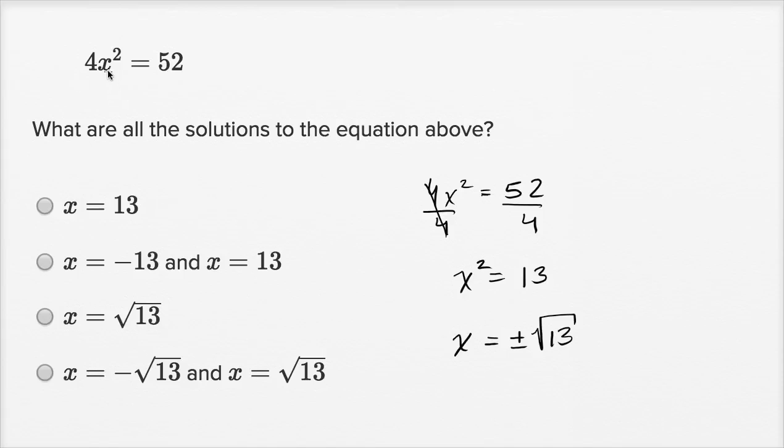Take the negative square root of 13. Well when you square it, you're going to get 13, because a negative times a negative is positive, and then you multiply it times 4, you're gonna get 52.